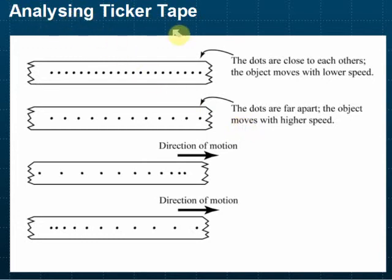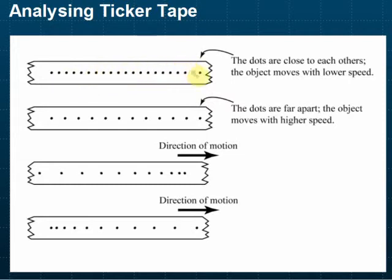We analyze ticker tapes by referring to the distributions of the dots. If the dots are very close to each other, it means that the ticker tape moved slowly. If you pull it slowly, you make a lot of dots close together on the paper. If it moves very fast, then the distance between the dots will be further — the dots are far apart.